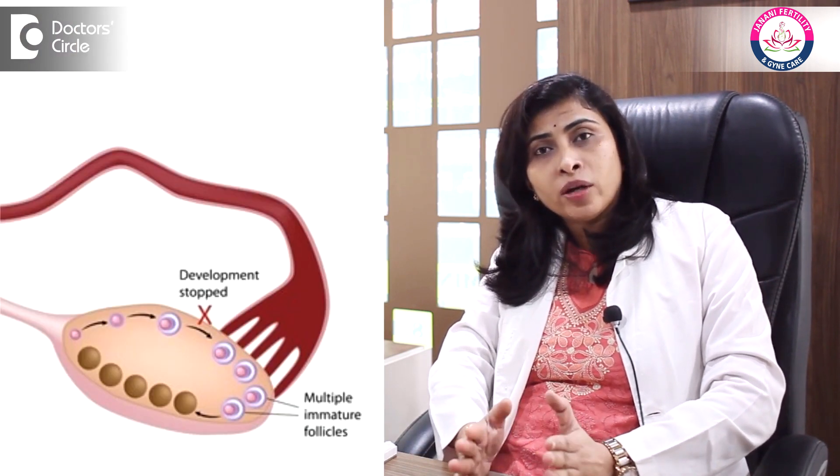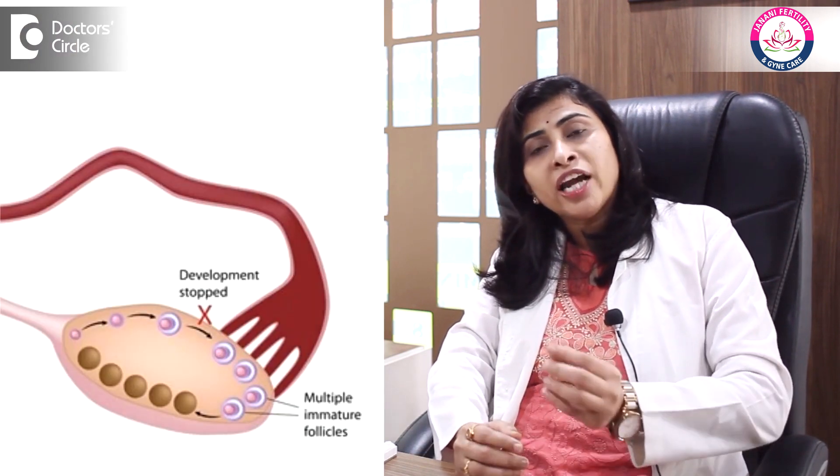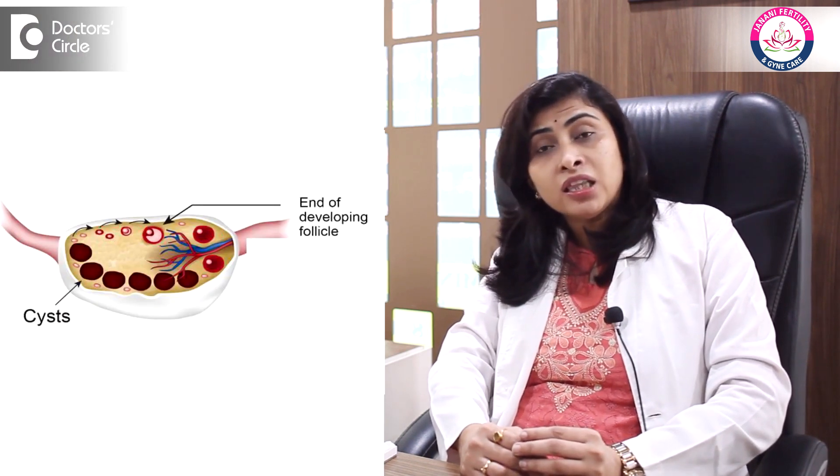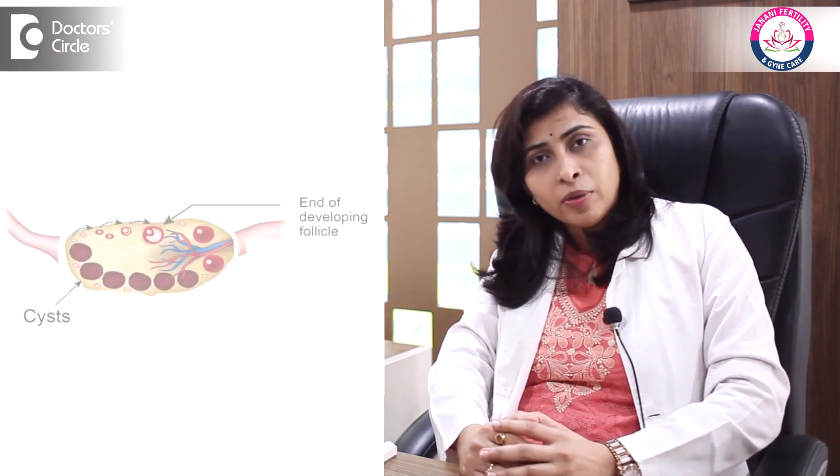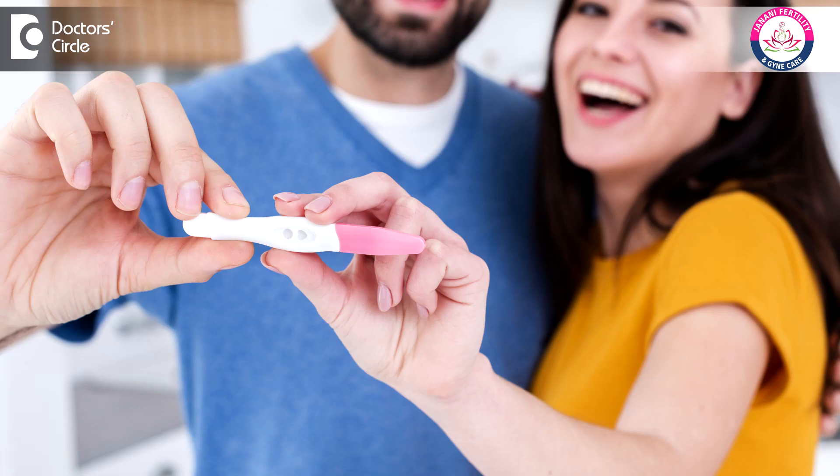In cases like polycystic ovarian syndrome — that is PCOS — we see a large number of follicles. Normally, in a patient without any hormone imbalance, there should be 8 to 10 follicles visible. In PCOS, we might see 20 to 30 follicles, and none of them will be growing. At that time, we can use certain hormonal tablets and injections to stimulate follicle growth, ensuring that follicular growth happens and improving the chance of pregnancy.